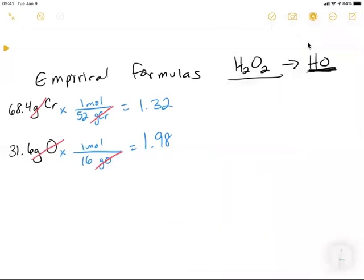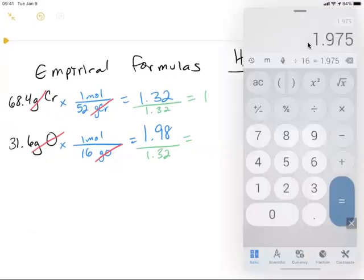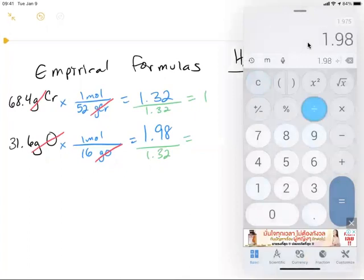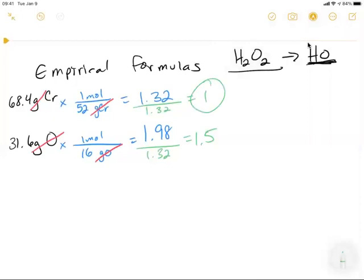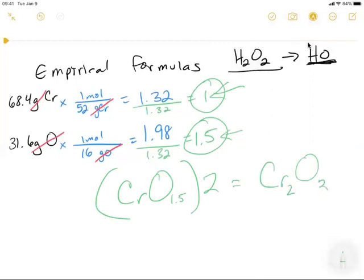Now the next step is you're going to divide both numbers by the smallest of these numbers. So of 1.32, 1.98, 1.32 is smaller. So I'm going to divide by 1.32. And I get 1.5. Now, under normal circumstances, these would represent the subscripts in the formula. So the formula, remember, it always starts with the metal first. So it's Cr. And then the subscript for Cr is 1. So I leave that blank. And then O, which is 1.5. But you cannot have decimals as a subscript. So if this happens, then basically what that means is you have to multiply the whole thing times 2. So you get Cr2O3. Ta-da! That is the empirical formula.